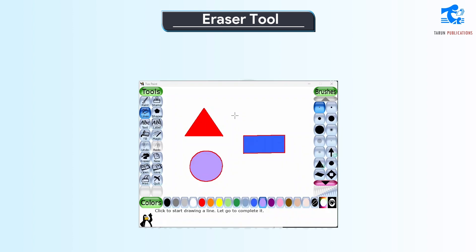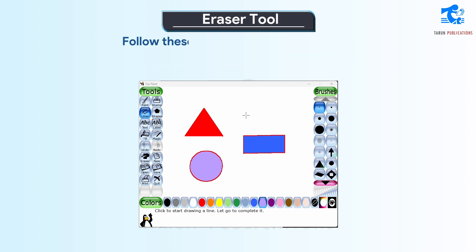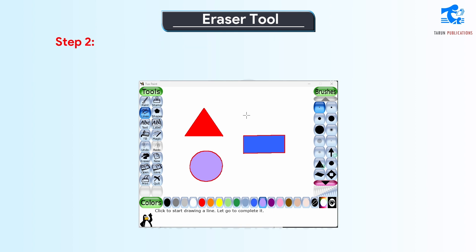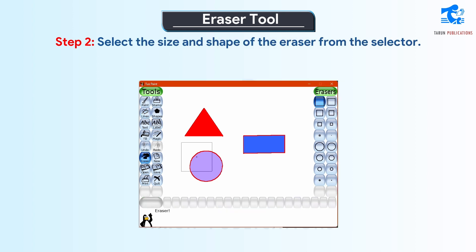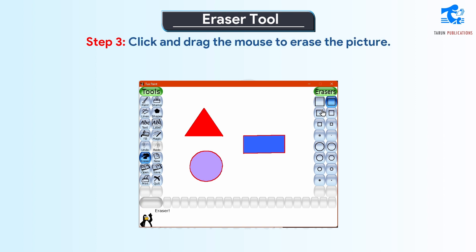Eraser tool. The eraser tool is used to erase the unnecessary part of the drawing from the drawing canvas. Follow these steps to use the eraser tool. Step 1: Click on the eraser tool. Step 2: Select the size and shape of the eraser from the selector. Step 3: Click and drag the mouse to erase the picture.